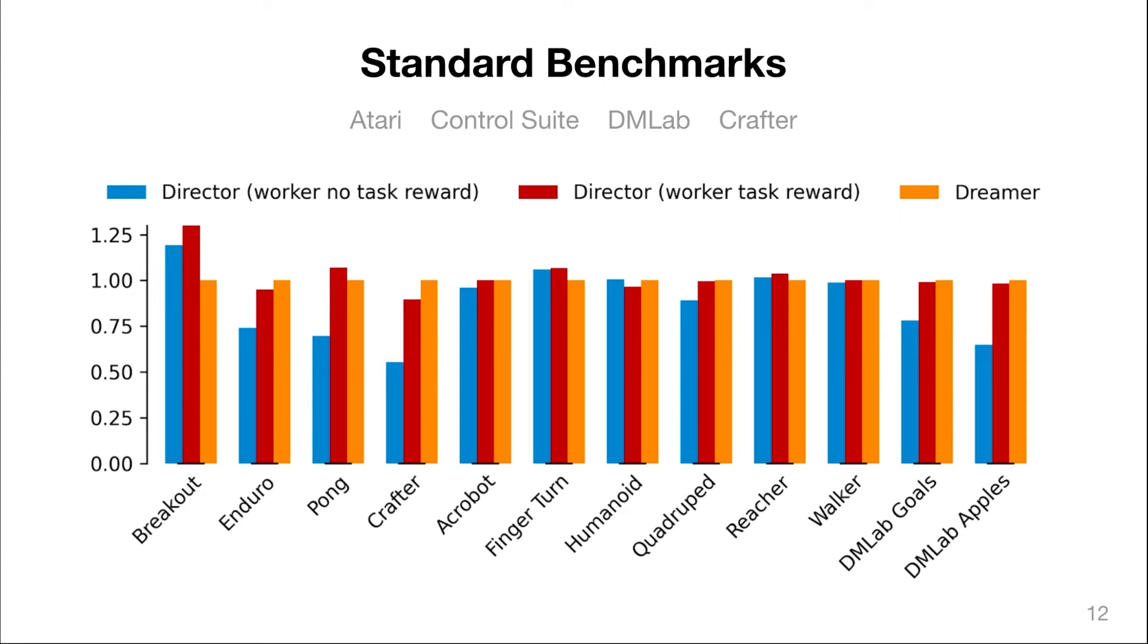When additionally giving a small amount of task reward to the low-level policy, it approaches or exceeds the performance of Dreamer on these tasks. This shows that Director not only achieves high performance on sparse reward tasks, but is also generally applicable even to tasks with more dense rewards.